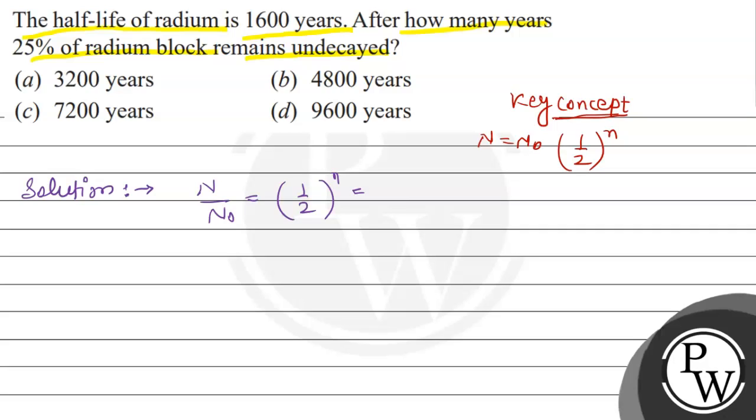We can calculate that 25% of radium block remains undecayed. This one is 25 by 100 equals to one by two raised to power n. Now, this one is one by four is equal to one by two raised to power n.